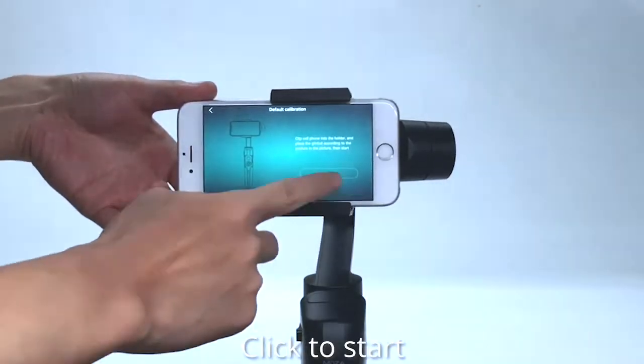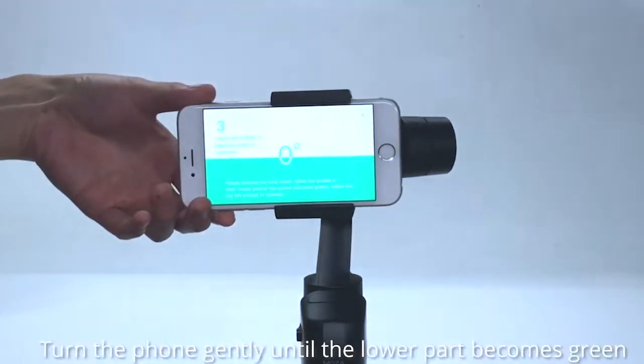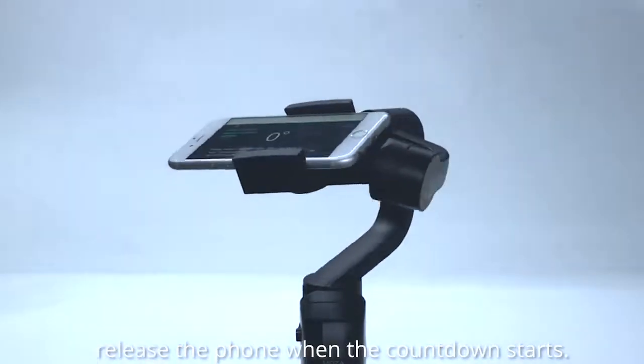Click to start. Hold the phone and make sure the phone screen is facing the operator. Turn the phone gently until the lower part becomes green. Release the phone when the countdown starts.